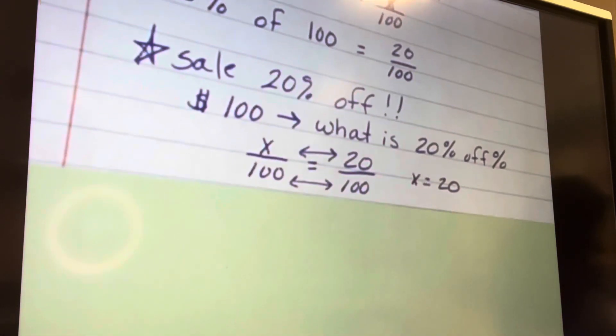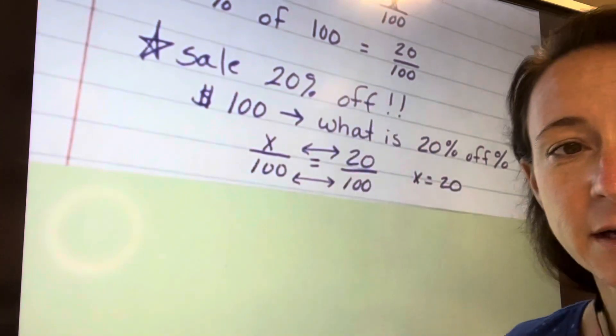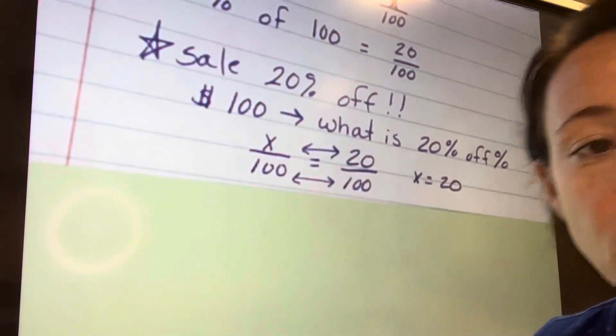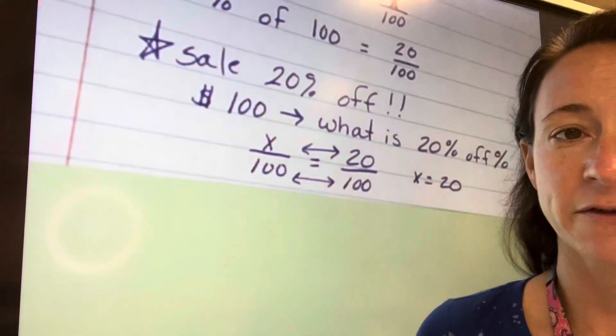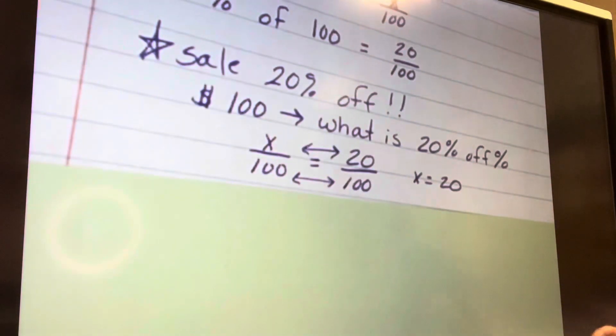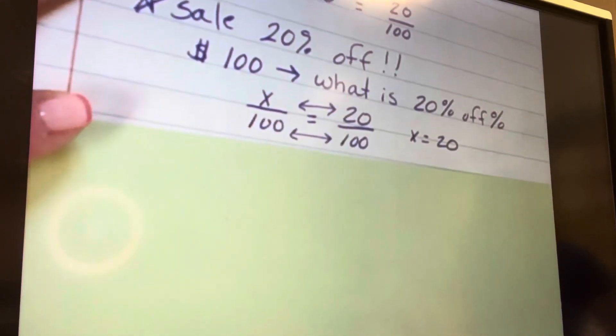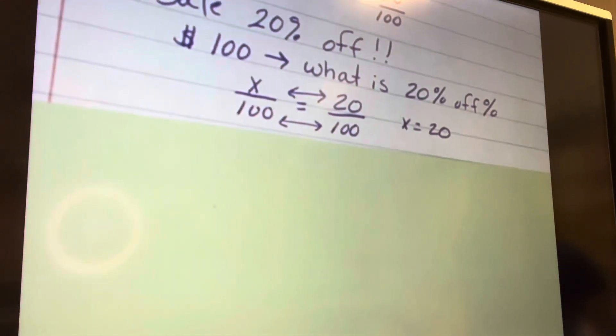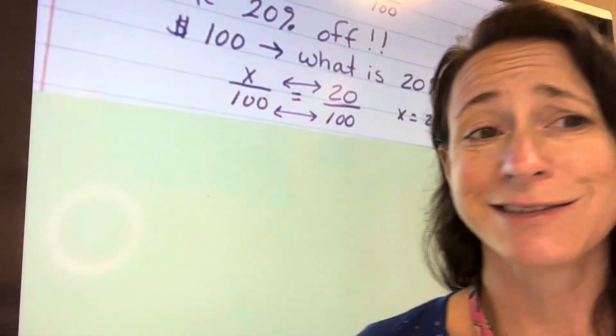Here we have an example of a sale, 20% off. What if it costs $100? We say what is 20% off? We can write it as a fraction as X over 100, and 20% we write as 20 over 100. So 20% off would be $20 off of $100.